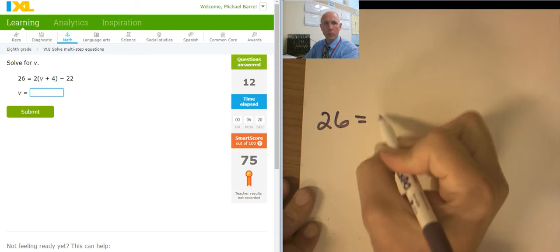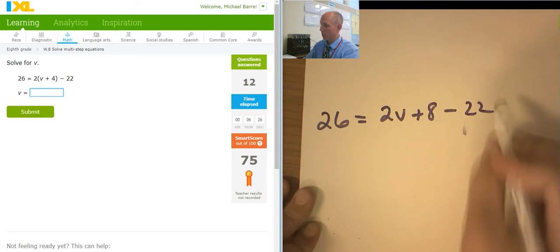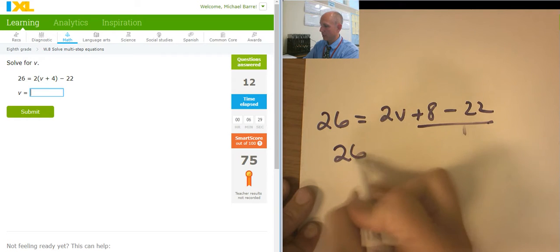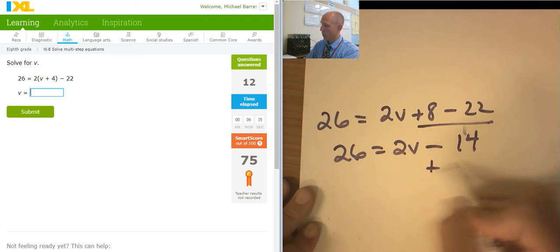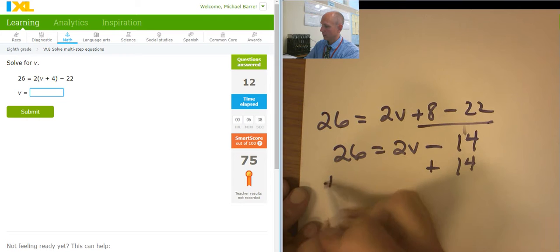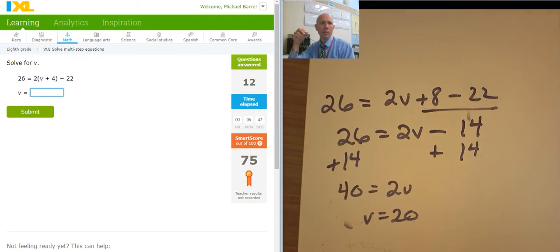26. Here's the distribution. 2v plus 8 minus 22. So distribution. Now I'm going to combine those two terms. 26 equals 2v minus 14. Adding 14 to both sides. 30. Actually, that's 40, isn't it? 40 equals 2v. V equals 20. And what does it mean to be a solution? It means if I plug it in, it will work. I'm going to check this out. 20. 20 plus 4 is 24. Times 2 is 48. Minus 22 is 26. Okay, I like it. 20. Just checking it to make sure it's good. Wonderful.